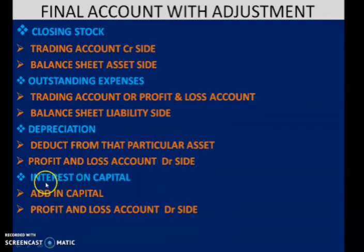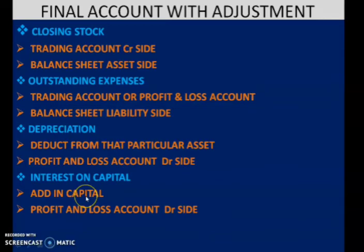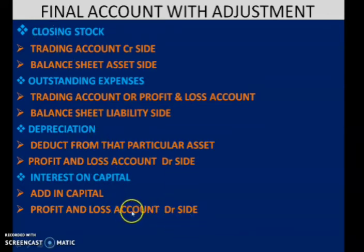The fourth adjustment item is interest on capital. If the question gives a rate like 5% or 10% interest on capital, calculate that percentage on the capital amount, add it to the capital, and the second effect is shown on the debit side of the profit and loss account. These are some important adjustments related to the final account 8-mark question.